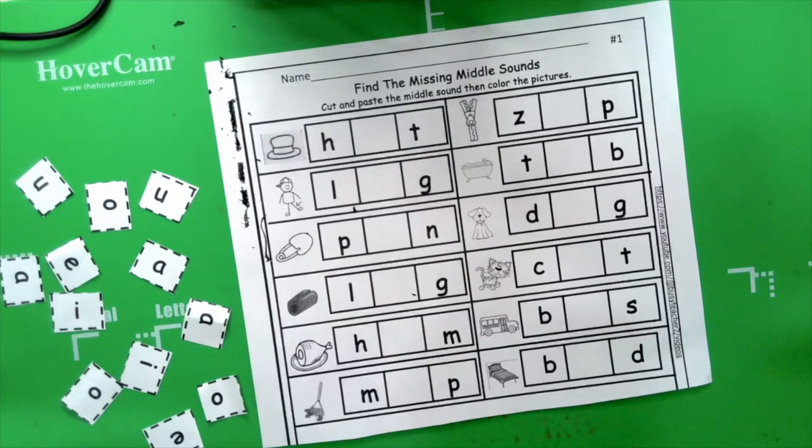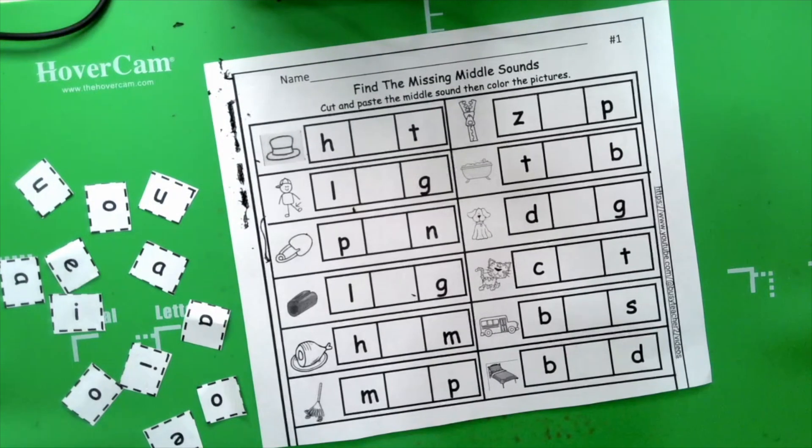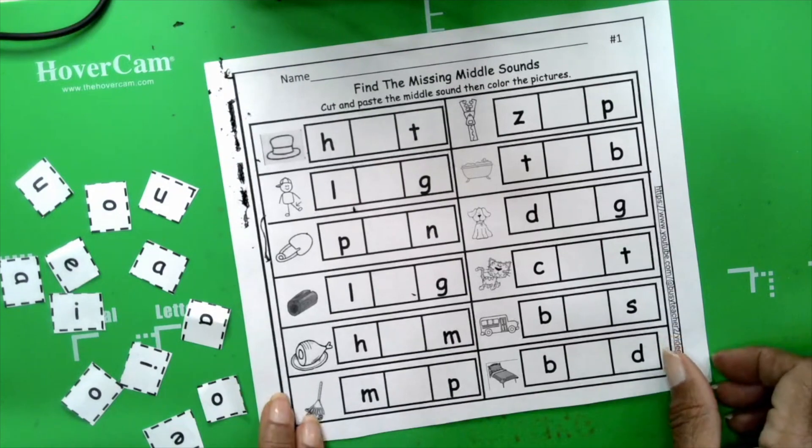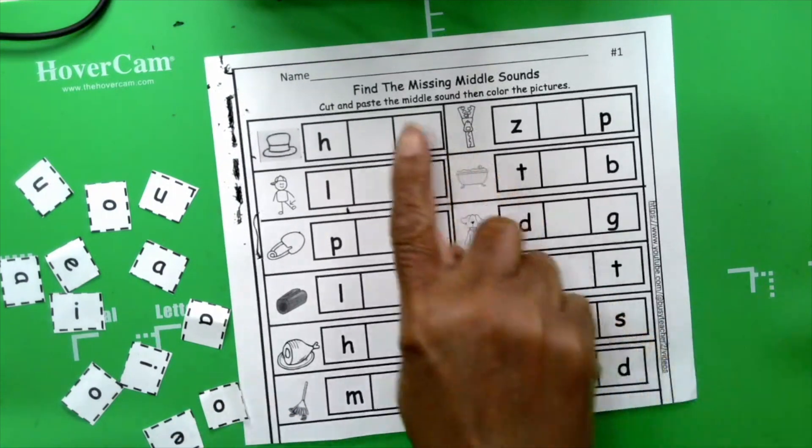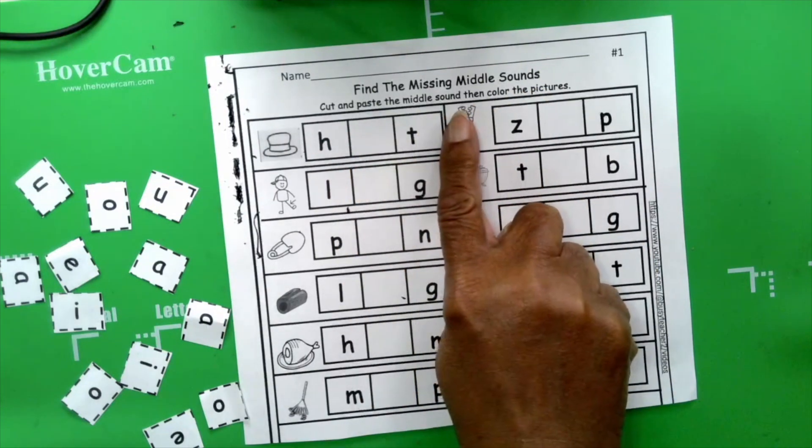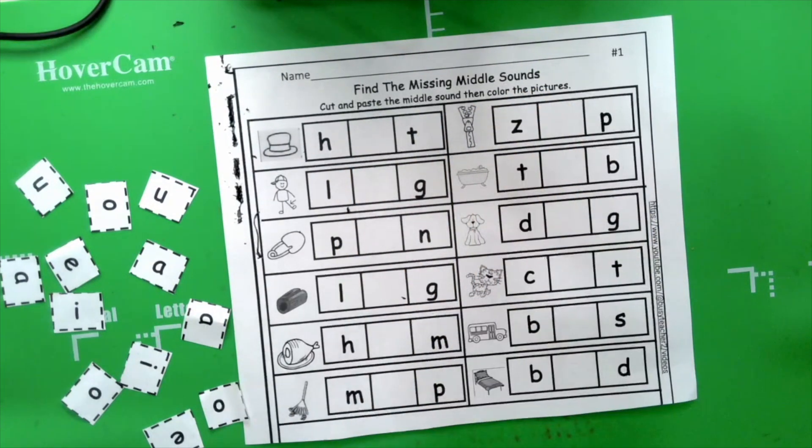Okay. Before we start, let's read our directions because the directions tell us what to do. It says, find the missing middle sounds, cut and paste the middle sound, then color the pictures. And that's exactly what we're going to do.